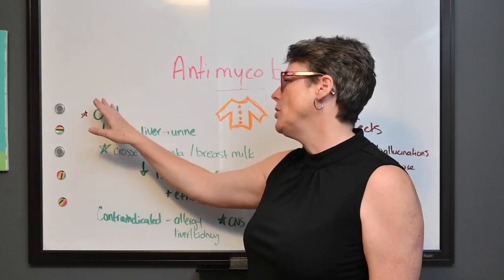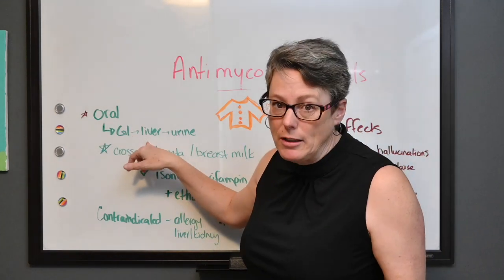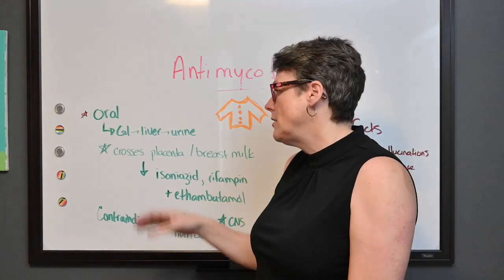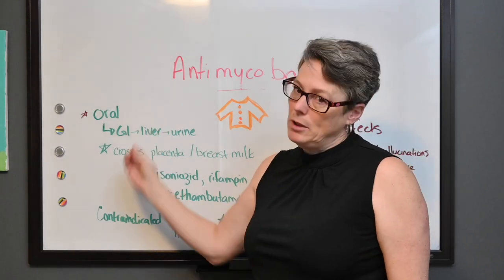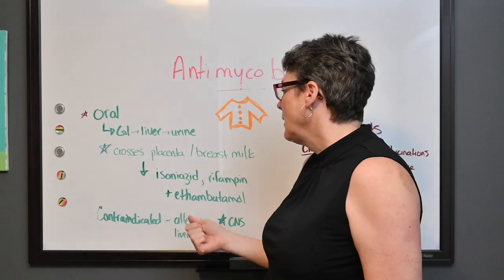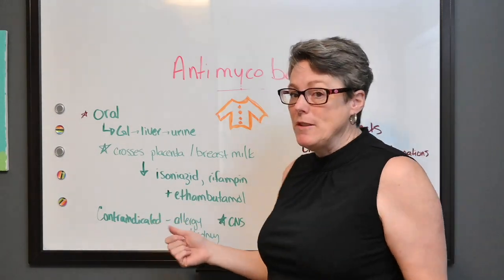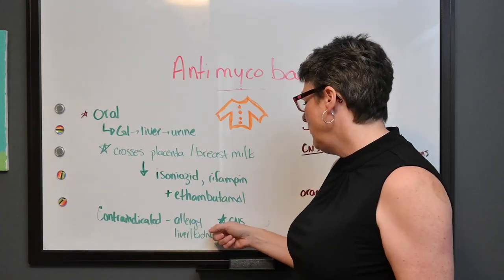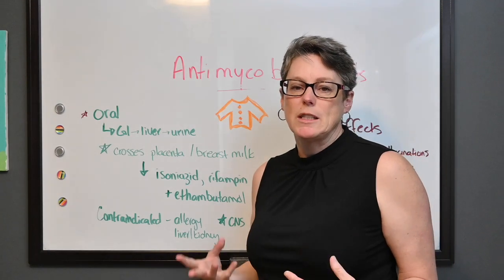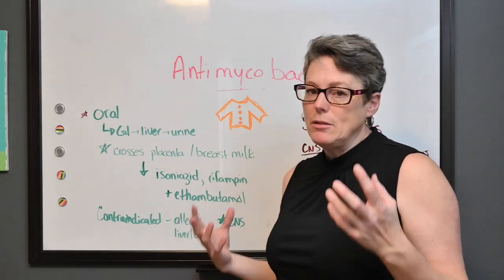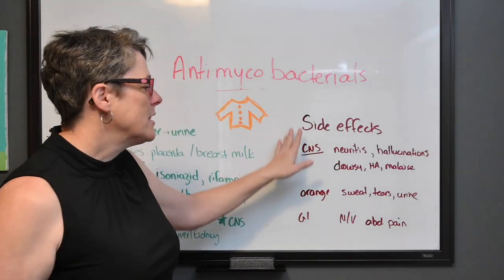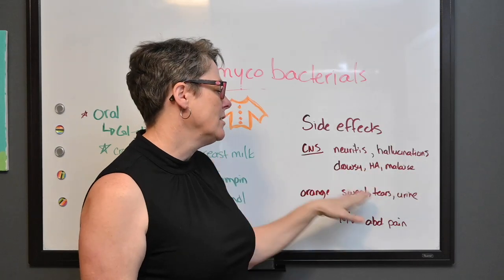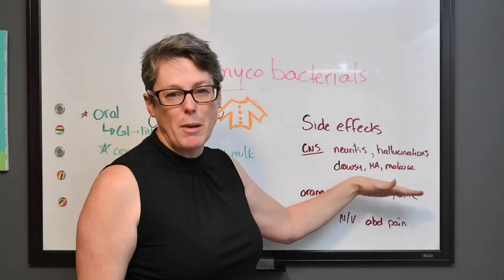Contraindications: because these medications are metabolized by the liver and excreted by the kidneys, you need to make sure liver and kidney function are adequate. If a patient has severe liver or kidney disease, address that — it may require a conversation with the physician. Allergies to the medication are of course a contraindication. If a patient has severe CNS challenges, watch carefully, because CNS side effects include neuritis, hallucinations, drowsiness, headache, and malaise.